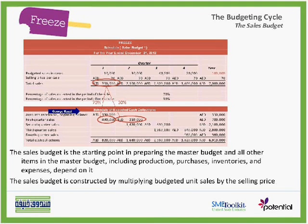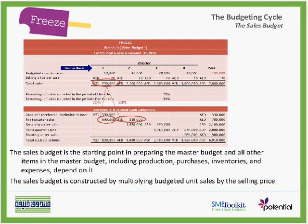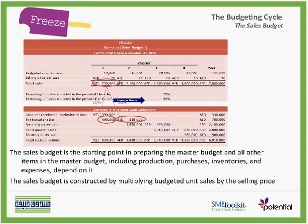Cash collection consists of collection of credit sales made to customers in the prior period, plus collection on sales made in the current budget period. In the example of Freeze, the budget period is on a quarterly basis. At Freeze, sales are on credit. Furthermore, the experience of the company has shown that 70% of the sales are collected during the same period, and the remaining 30% are collected in the following quarter.